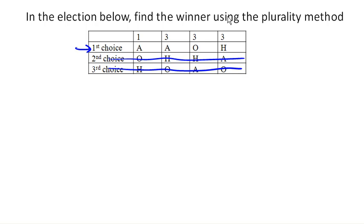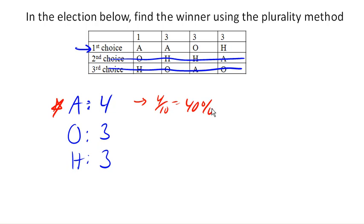So notice here that A got four first choice votes, one here and three here, or O here got three first choice votes and Hawaii got three first choice votes. And so the winner under plurality method is A. Notice that this is however 4 votes out of 10, which is 40%. So this is not a majority, this is what's called a plurality, and hence the plurality method.